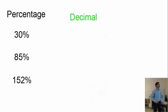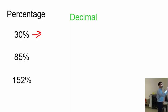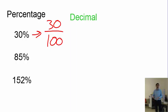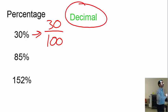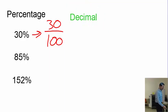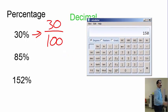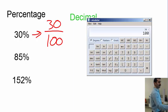Next is from percentage to decimal. The easiest way is to divide the percentage by 100. For example, 30% becomes the fraction 30 over 100. We aren't simplifying this time — we want a decimal. Use the calculator: 30 divided by 100 gives 0.3.